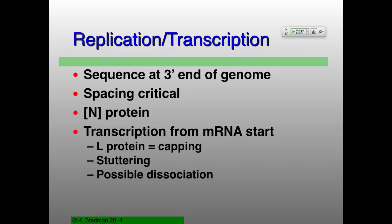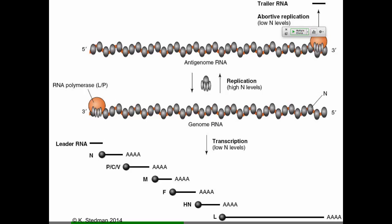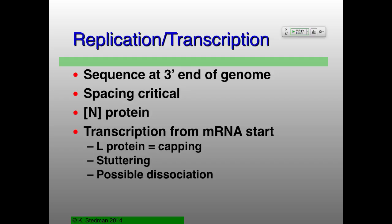The N protein is encoded by the first messenger RNA which is made — it's at the three prime end of the genome. You also have sequences at the three prime end of the genome where the RNA-dependent RNA polymerase will associate. The big question is: are we going to make messenger RNAs or are we going to make genome? And that really depends on the concentration of this N protein.